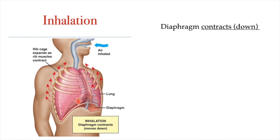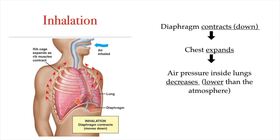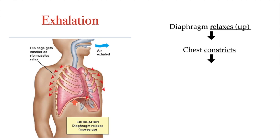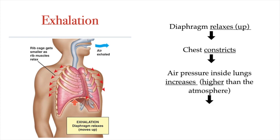So when we inhale, our diaphragm contracts and moves down. Our intercostal muscles also contract and expand our ribcage. This combination expands our chest cavity, which decreases the air pressure inside the lungs, causing it to be lower than the atmospheric pressure outside the body. Since air flows from higher to lower pressure, air flows into the lungs. The opposite happens when we exhale: the diaphragm relaxes and moves up, the chest cavity constricts, causing air pressure inside the lungs to increase higher than atmospheric pressure, and air moves out of the lungs.